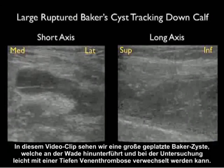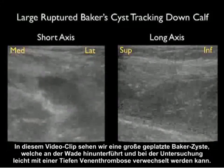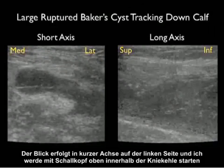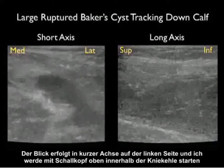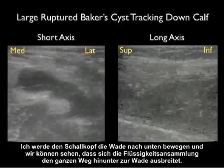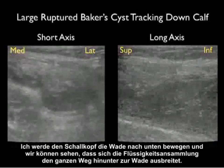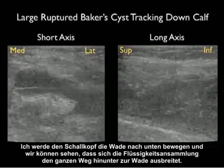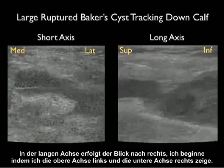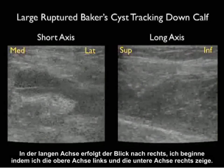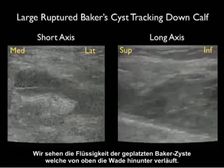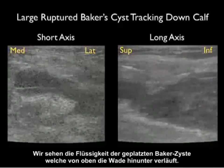In this video clip, we see a large ruptured Baker's cyst tracking down the calf and closely approximating a DVT on clinical examination. We see a short axis view to the left, starting with the probe high within the popliteal fossa, and moving the probe down the calf we can see that the fluid collection spreads all the way down the calf. In the long axis view to the right, showing superior to the left and inferior to the right, we can see the fluid collection of the ruptured Baker's cyst tracking from superior all the way inferiorly down the calf.